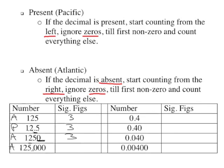The same thing is going to happen with the next one. We're going to ignore these first three zeros. Because the decimal is absent, we start from the right, ignore zeros, and then count one, two, three.